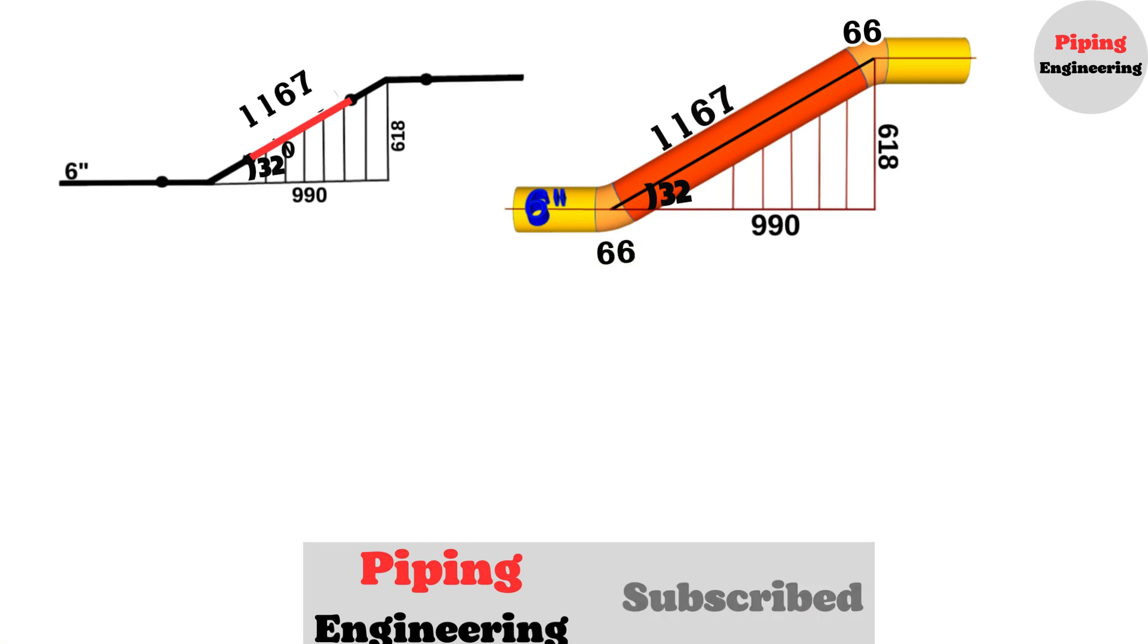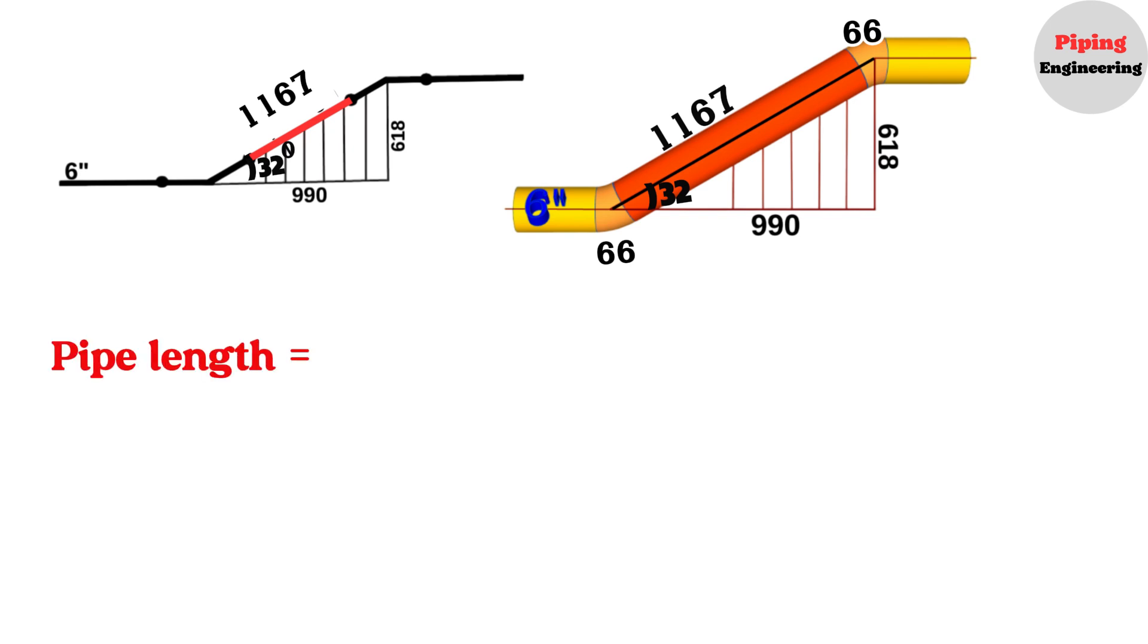We wrote the following formula earlier in this video. Pipe length equals the overall length, center-to-center distance minus 2 times the take-off length of the elbow minus 2 times the gaps for welding. Now, we will substitute our overall length, elbow length, and welding gap information into this formula.